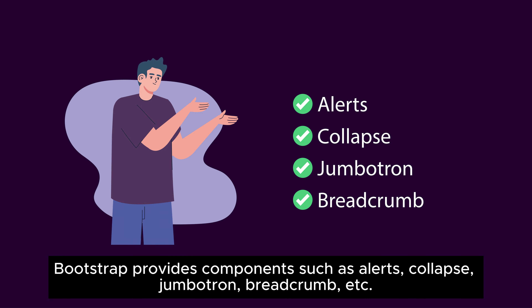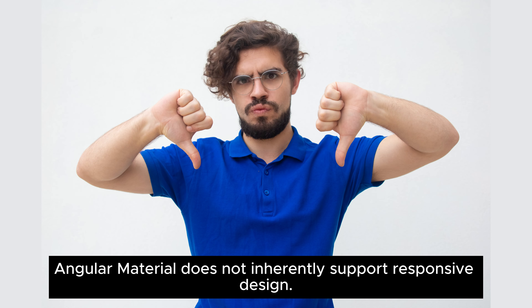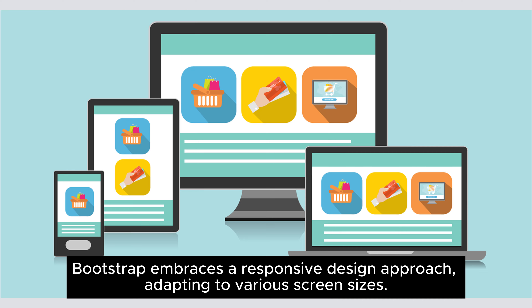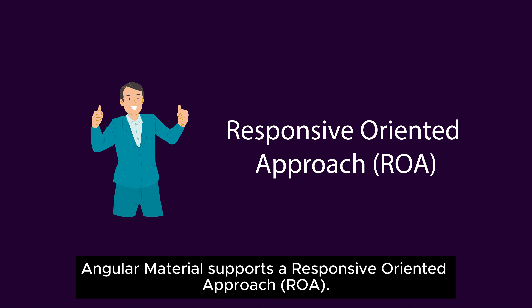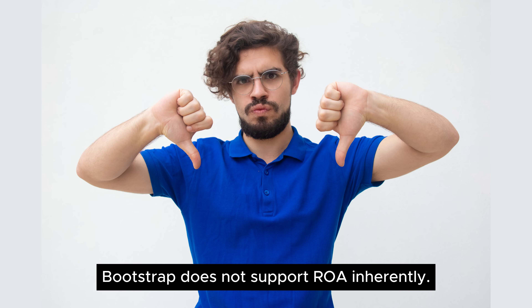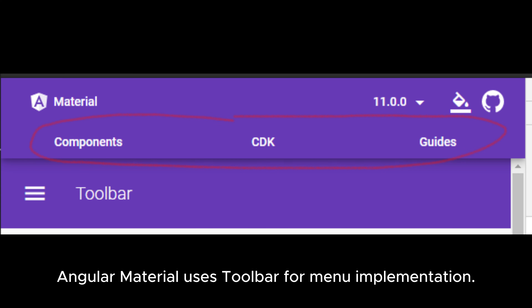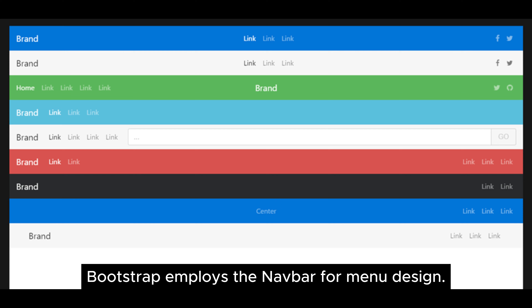Bootstrap provides components such as alerts, collapse, jumbotron, and breadcrumb. Regarding responsive design, Angular Material does not inherently support responsive design, while Bootstrap embraces a responsive design approach adapting to various screen sizes. For menu styles, Angular Material uses a toolbar for menu implementation, whereas Bootstrap employs the navbar for menu design.